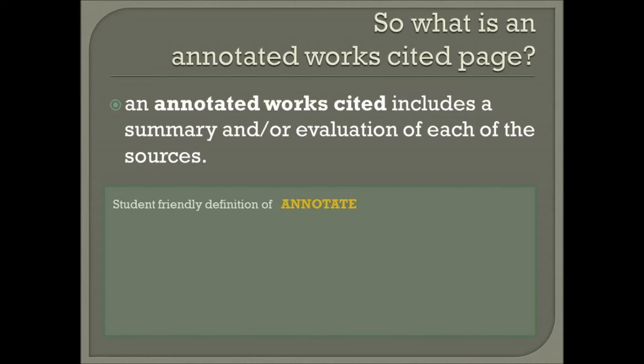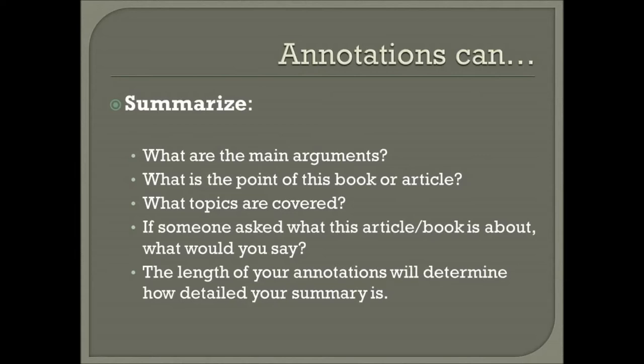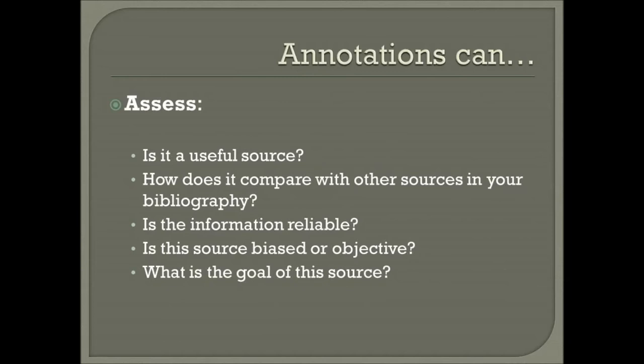An annotation has three parts to it. The first part is a summary. If you look on the slide you can see some prompts to help you summarize the source — and the same goes for books, movies, whatever source you're using. With the summary you want to find out what are the main arguments, what's the point of this piece of research, and what topics are covered. So you're going to give just a brief overview of what material is in the source.